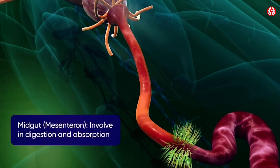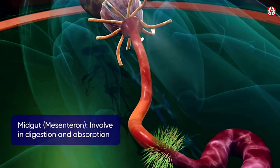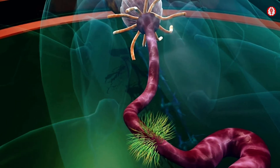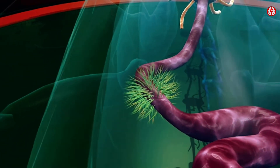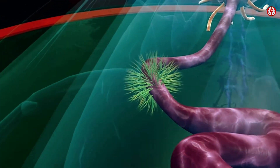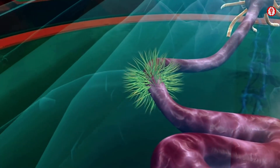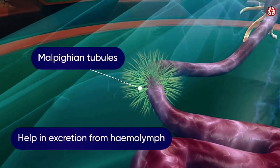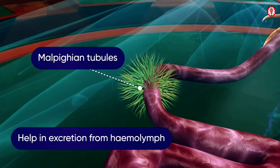At the point where the midgut opens into the hindgut, a number of thin yellowish tubules are found. These are the Malpighian tubules, which help in excretion.